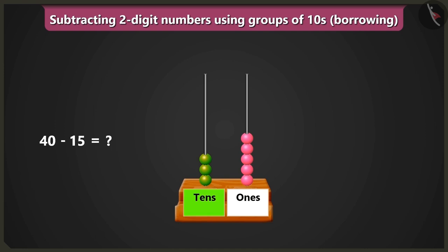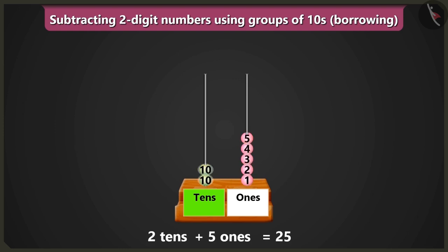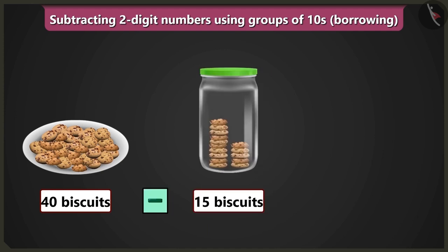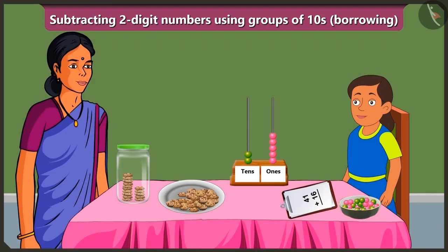Now we will subtract in the box of tens. So now two beads would remain in the box of tens and five beads would remain in the box of ones. In this way, if we fill the jar with fifteen biscuits, then twenty-five biscuits would remain in this plate. Well done, Bubbly.